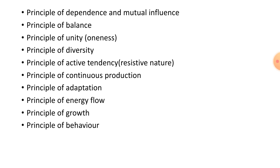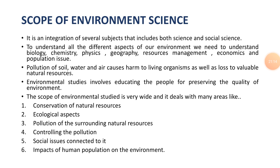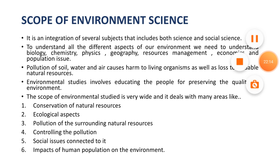The scope of environmental science is very wide. It is an integration of several subjects that includes both science and social science. To understand all the different aspects of our environment, we need to understand biology, chemistry, physics, geography, resources management, economics, and population issues. All these branches are related to environmental science. Pollution of soil, water, and air causes harm to living organisms as well as loss of valuable natural resources.